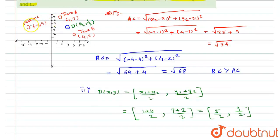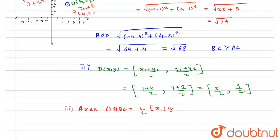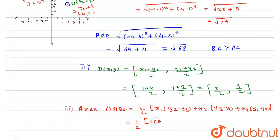Now for the third question, we need to find the area of triangle ABC. The formula for area using coordinates is: (1/2) times |x1(y2 minus y3) plus x2(y3 minus y1) plus x3(y1 minus y2)|. Substituting: (1/2) times |1(2 minus 4) plus 4(4 minus 7) plus (−4)(7 minus 2)|.